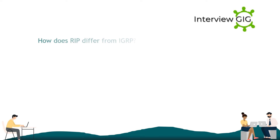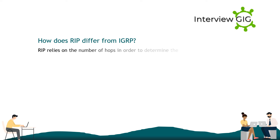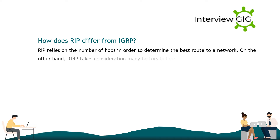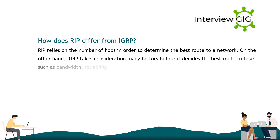How does RIP differ from IGRP? RIP relies on the number of hops to determine the best route to a network. IGRP, on the other hand, takes many factors into consideration before deciding the best route, such as bandwidth, reliability, MTU, and hop count.